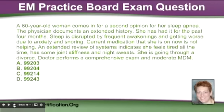A 60-year-old woman comes in for a second opinion for her sleep apnea. The physician documents an extended history. She's had it for the past four months. Sleep is disrupted by frequent awakenings and getting worse due to anxiety and snoring. Current medication she is on is not helping. An extended review of systems indicates she feels tired all the time, has some joint stiffness and night sweats. She is going through a divorce. The doctor performs a comprehensive exam and moderate medical decision making.